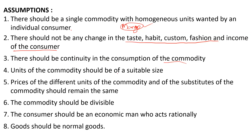Fourth, units of commodity should be of suitable and equal size. Fifth, the prices of different units of the commodity and its substitutes should remain the same during the study period. The commodity should be divisible, and the consumer should be a rational economic man whose aim is to get maximum satisfaction. These are the assumptions of the Law of Diminishing Marginal Utility.